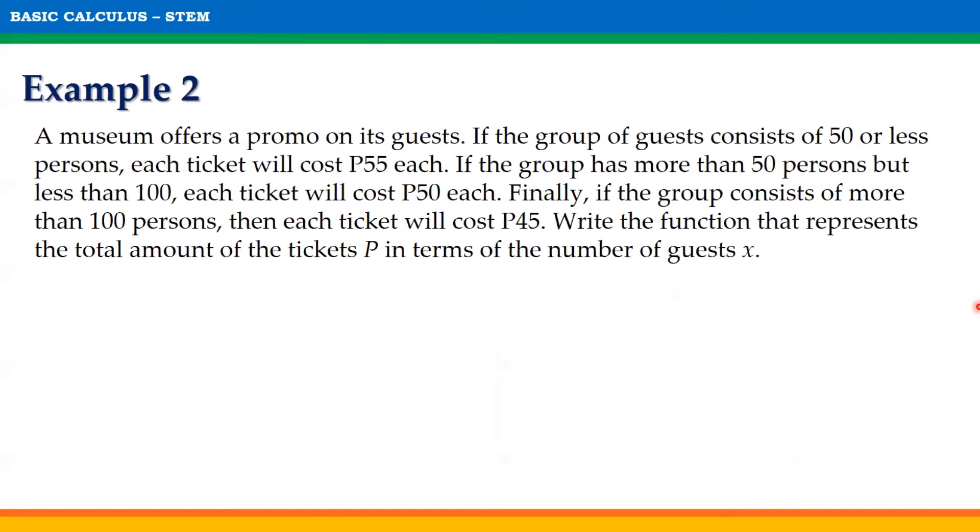For problem number 2, a museum offers a promo on its guests. If the group of guests consists of 50 or less persons, each ticket will cost 55 pesos each. If the group has more than 50 persons but less than 100, each ticket will cost 50 pesos each. Finally, if the group consists of more than 100 persons, then each ticket will cost 45 pesos each.